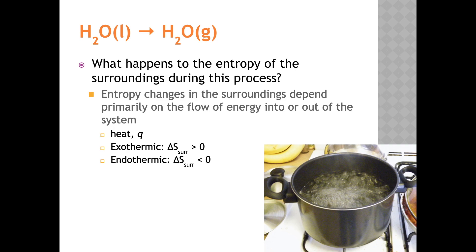For an exothermic process, delta S of the surroundings is positive. For an endothermic process, delta S of the surroundings is negative. Since vaporization is an endothermic process and heat flows out of the surroundings and into the system, the random motion of the surroundings molecules decreases. So the entropy of the surroundings decreases, and delta S of the surroundings is negative.